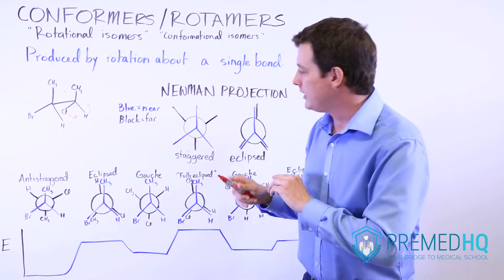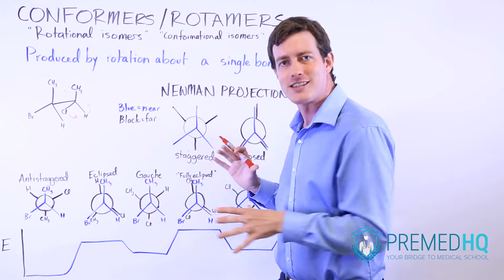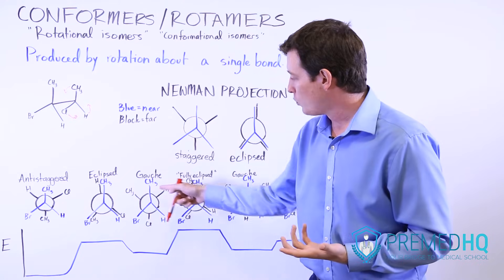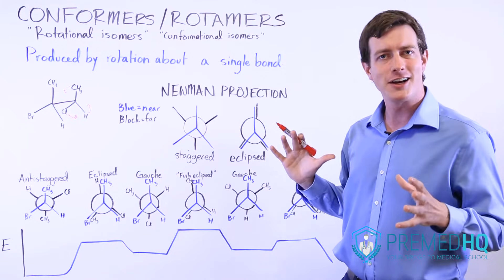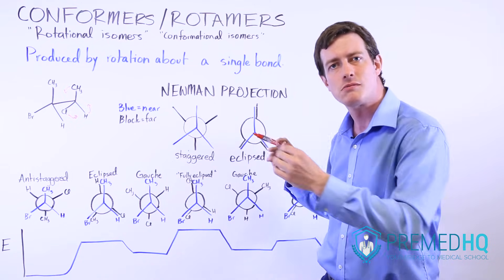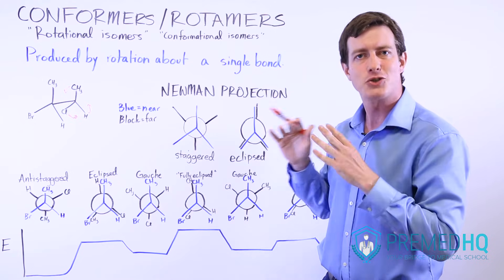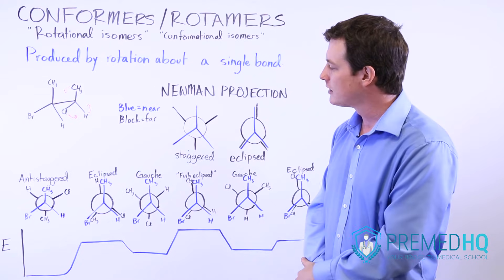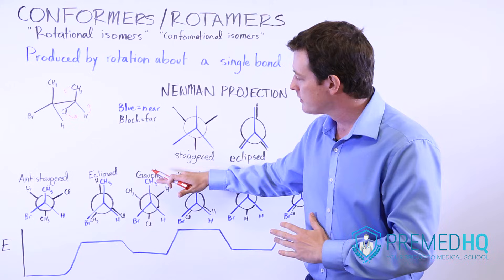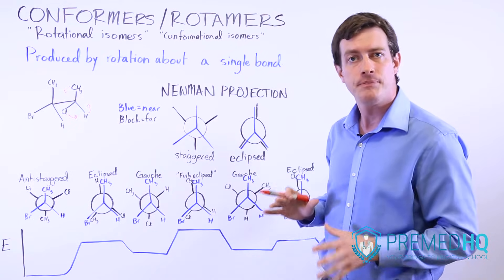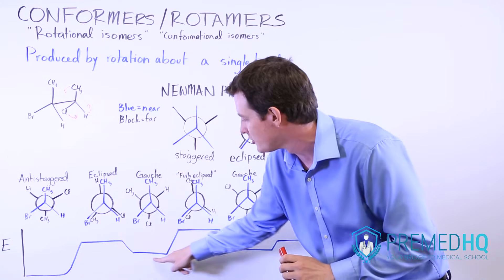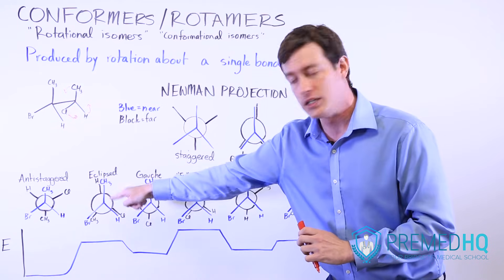Our next rotational isomer is one that is staggered but not ideally staggered — not anti-staggered — because now the methyl groups are kind of close to each other. There's a chance those C-H bonds might interact, and the electrons in those bonds might interact with each other. But it is still a fairly stable conformation because of the staggered arrangement. We call this gauche — G-A-U-C-H-E — a staggered but not ideally staggered conformation. Notice the energy level dips a bit; this is more stable than the eclipsed position.